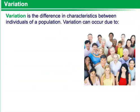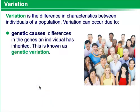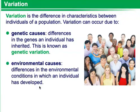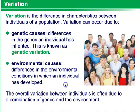Variation is the difference in characteristics between individuals of a population. Variation can occur due to genetic causes — these are differences in the genes an individual has inherited, known as genetic variation. It can also arise from environmental causes: differences in the environmental conditions in which an individual has developed. The overall variation between individuals is due to a combination of genes and the environment.